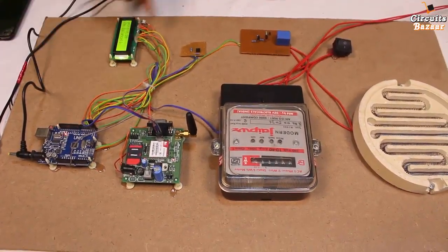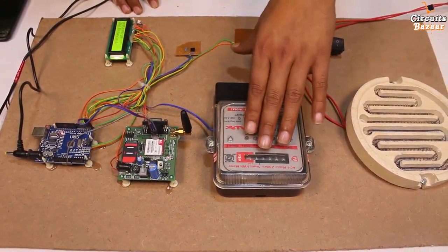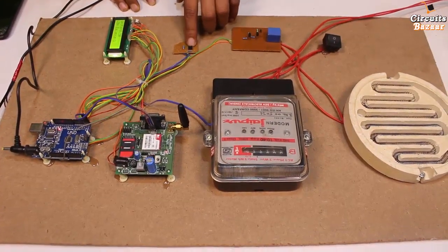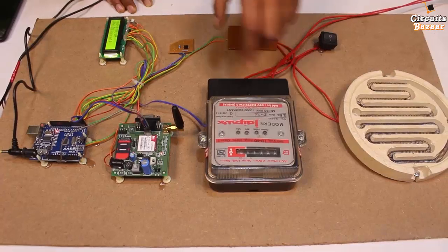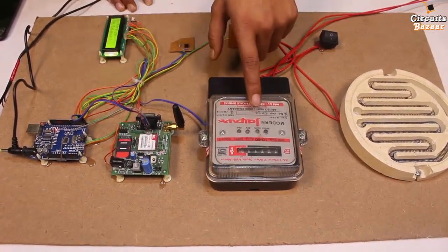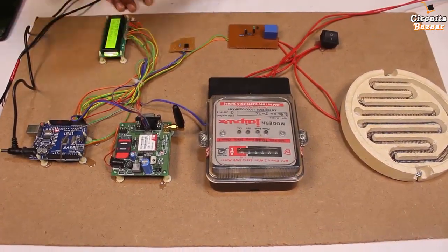This Arduino board is basically getting signal from the energy meter, and energy meter is getting signal from this arrangement. Actually, this is the optocoupler arrangement. Basically, optocoupler is used here to interface energy meter to the Arduino board.